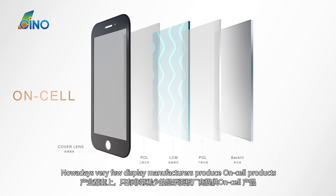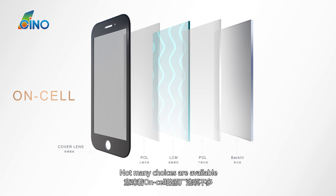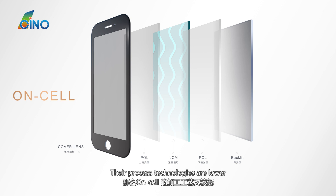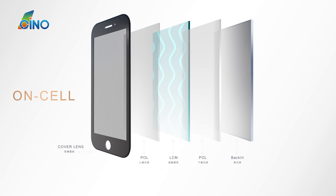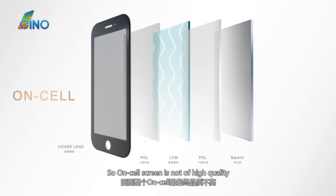Nowadays, very few display manufacturers produce on-cell products, so not many choices are available. They use outsourcing services and their process technologies are lower, so on-cell screens are not high quality.